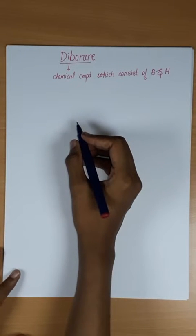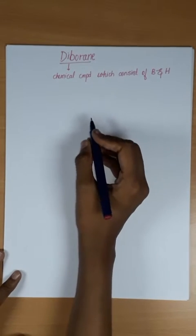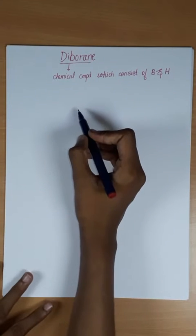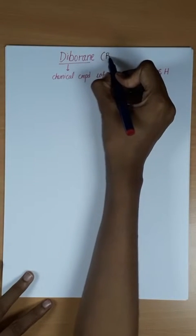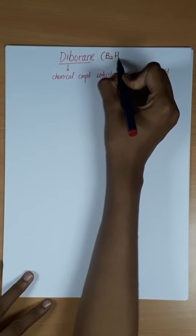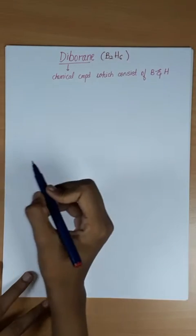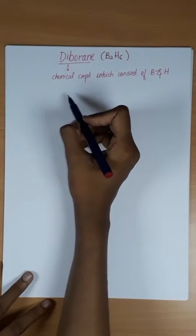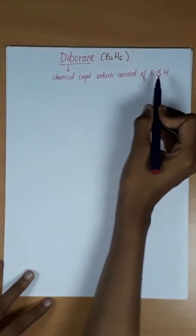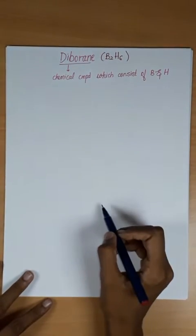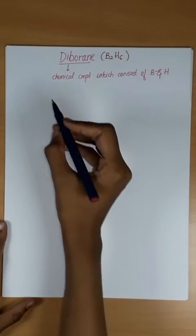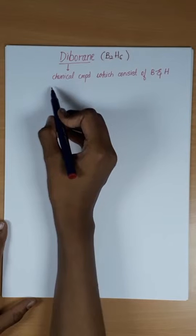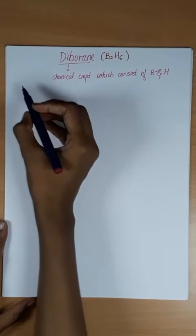Hello everyone, this is Priyanka. Today's topic is Diborane. Formula of Diborane is B2H6. Diborane is a chemical compound which consists of boron and hydrogen. In this video, I will explain you the preparation of Diborane.